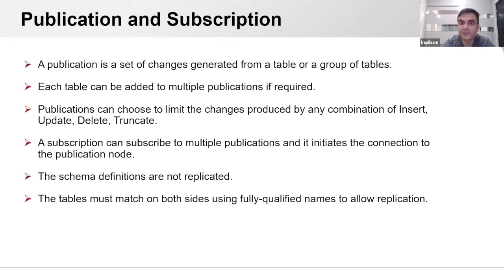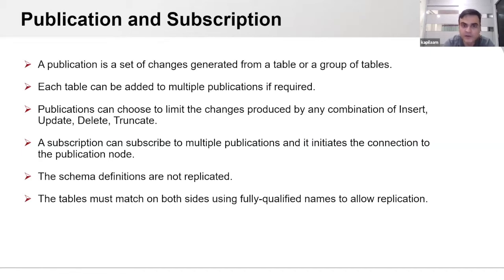A subscription can subscribe to multiple publications and it initiates the connection to the publication node. One important thing to note is that we don't have DDL replication at this stage, which means schema definitions are not replicated and users need to manually create the schema on each subscriber node. The table must match on both sides using fully qualified names — meaning the schema and columns must also match on both sides.